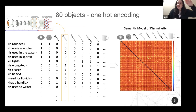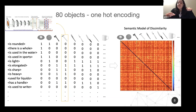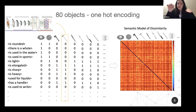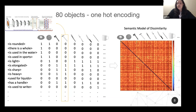We identified 855 single features in total. If a feature was never mentioned for a specific object — for example, 'rounded' was never mentioned for a hammer — that position in the vector gets a value of zero. If a feature was ever listed for that object, it gets a value of one. We then calculated the distances between these representations and created a semantic model.